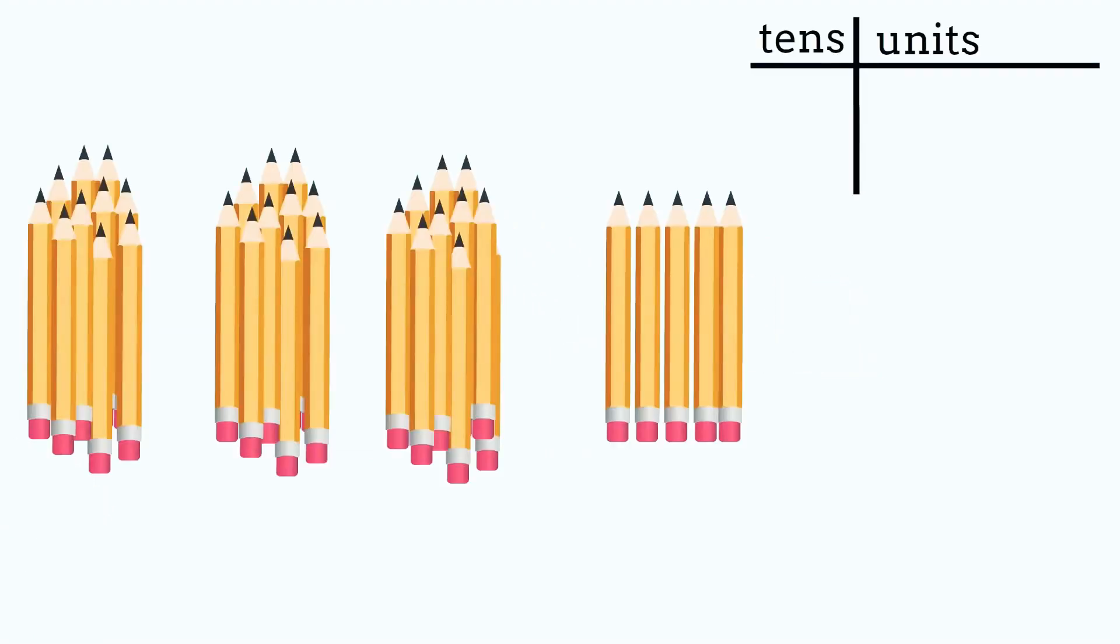Can you tell me what this number will be? Well done! Three 10s and 5 units make 35.